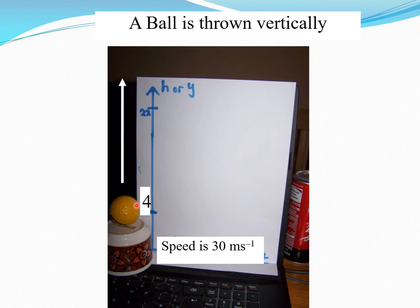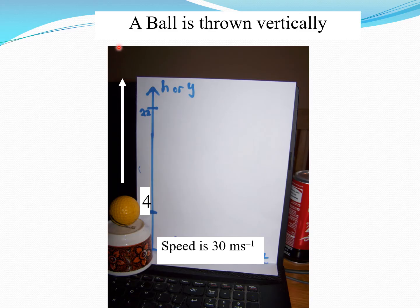Our first application: we take a ball and throw it vertically upwards. Assuming no air resistance, the initial speed is 30 m/s. We label the height axis (the y-axis). There's no horizontal component — the ball goes straight up and comes straight back down. So the x-coordinate is always zero; we track the height of the ball at different times.